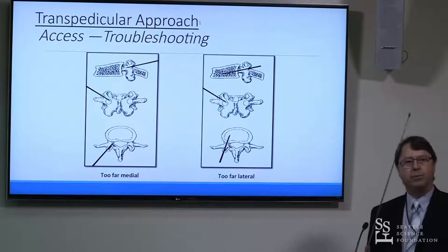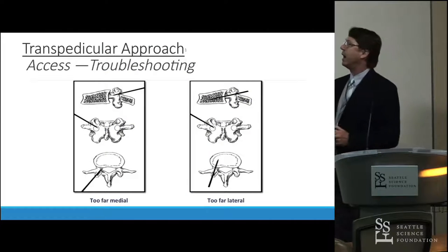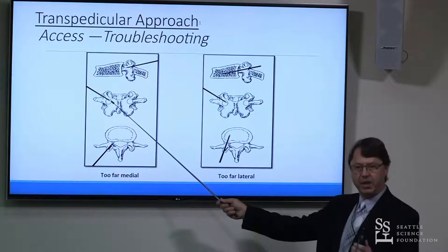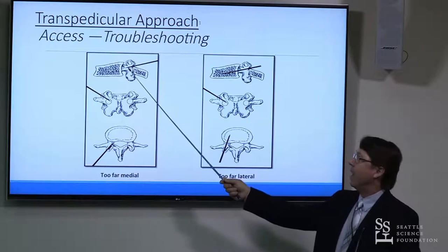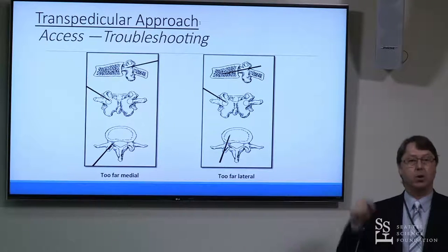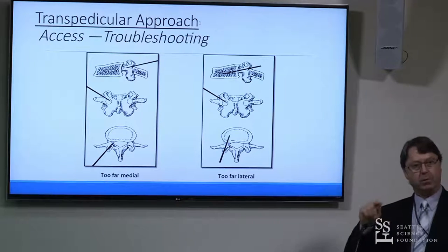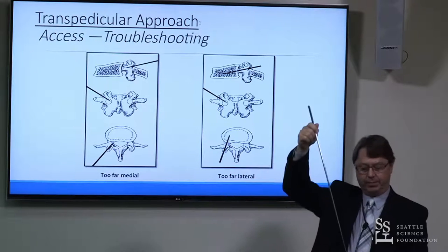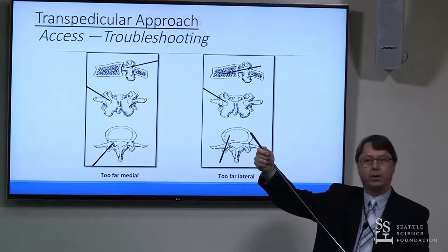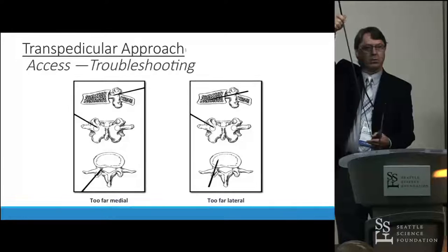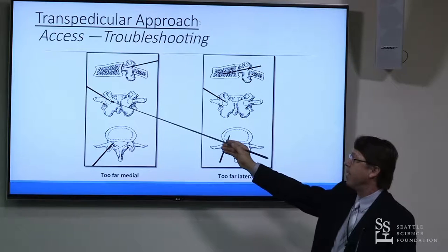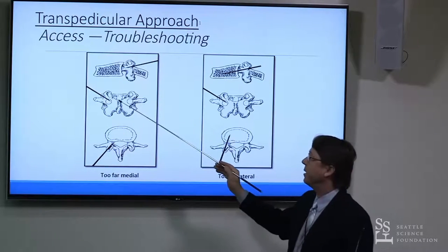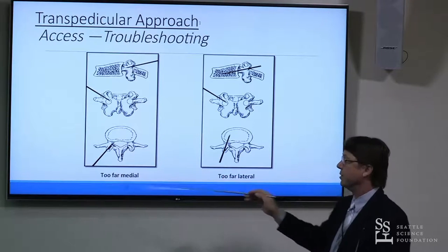When troubleshooting, if you know the three-dimensional anatomy and see the owl eyes, you can ask yourself on your lateral: when I reach the medial border of the pedicle, where am I on the AP? Where am I on the lateral? If you are at the medial border of the pedicle but too far medially on the lateral, you know you're aiming into the canal, because you should be at the medial border of the pedicle when your guide wire is at the posterior longitudinal ligament level. In that case you are coming in too diagonally and need to be more vertical — a very simple fix to back up, reorient to a more vertical position, advance, and recheck.